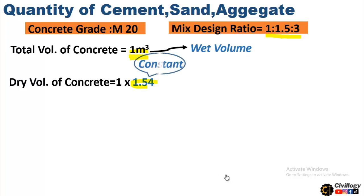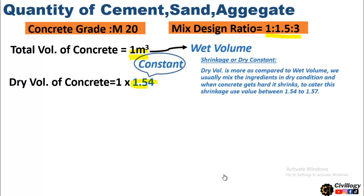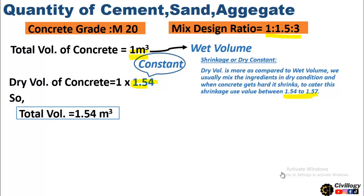Now what is 1.54? This is the dry constant, or you can say shrinkage constant. It is multiplied because the dry volume is more as compared to the wet volume. Cement, sand and aggregate are mixed in dry form, and when it gets wet, its volume shrinks a bit. To cater for this difference, we use this value, which ranges between 1.54 to 1.57. You can use any value within this range. So the total volume will be equal to 1.54.